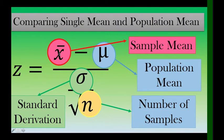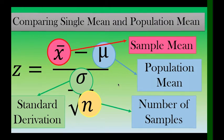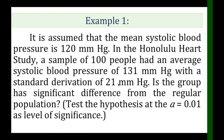In comparing a single sample mean and population mean, we use this formula: Z equals the sample mean minus mu, over sigma over the square root of n. Here, the sample mean is the sample mean, mu is the population mean, sigma is the standard deviation, and n is the number of samples.